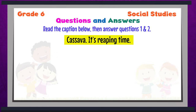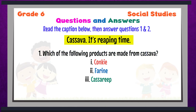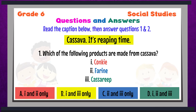Question 1. Read the caption below then answer questions 1 and 2. Cassava: it's reaping time. Which of the following products are made from cassava? Products 1, 2, and 3 are listed. Answer A is a combination of 1 and 2; answer B is a combination of 1 and 3; answer C is a combination of 2 and 3; and answer D is a combination of 1, 2, and 3. Write the letter that you think has the correct answer for question 1.